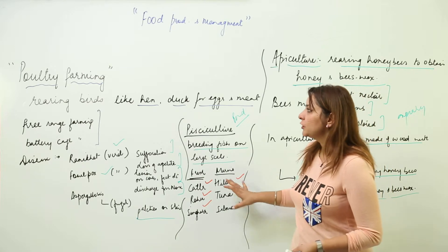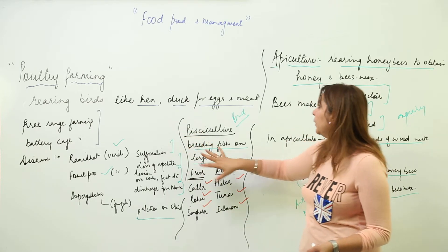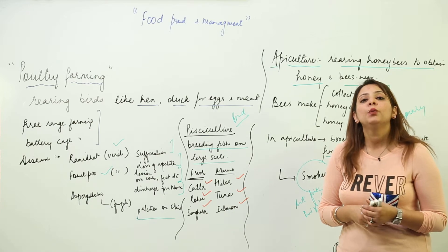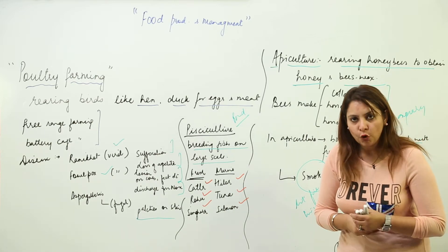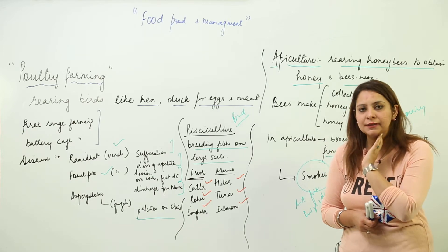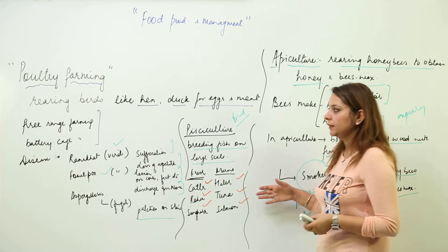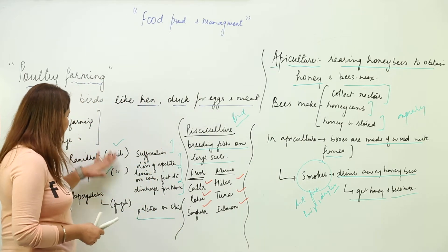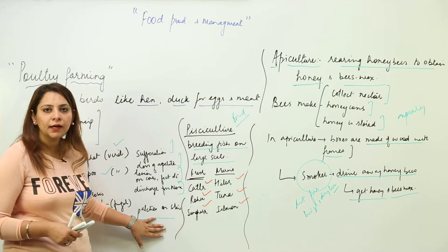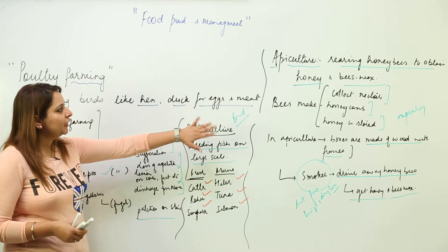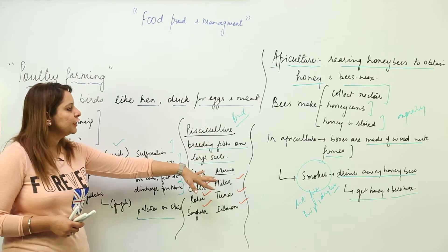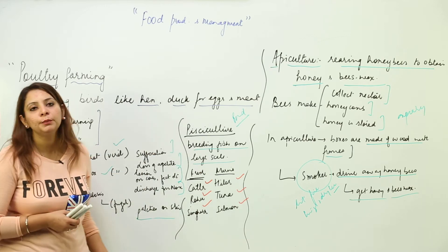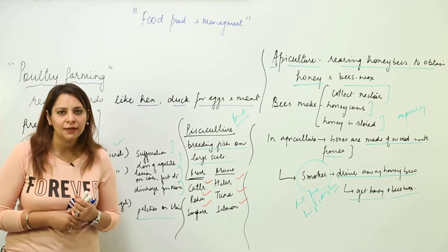So we have covered poultry farming, apiculture, and pisciculture. You should know the definitions, how each is done, and the diseases that can occur in organisms. Now we are moving on to sericulture, where we will be rearing silkworms to obtain silk.